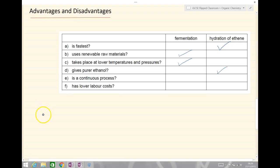A continuous process means that you can always keep adding more reactants in and the process keeps going. The opposite of a continuous process is a batch process and that is one where you have to stop the whole process, refill it all and then restart. So fermentation is a batch process because you have to empty all your barrels, refill them up, and restart the process again. The disadvantage is it slows the process down. So hydration of ethene is a continuous process.